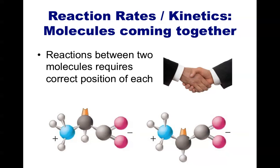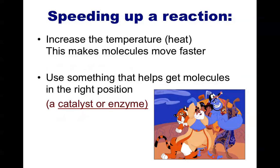There are several ways we can get this reaction or this handshake to happen quicker. One way would be to get the two people to move around faster — they would still bump into each other randomly, but the handshake would occur quicker. Likewise, we could speed up a chemical reaction by speeding up the motion of the molecules, which is equivalent to increasing the temperature. Temperature or heat energy is simply random kinetic energy, and with an increase in temperature comes an increase in the speed at which molecules are moving.